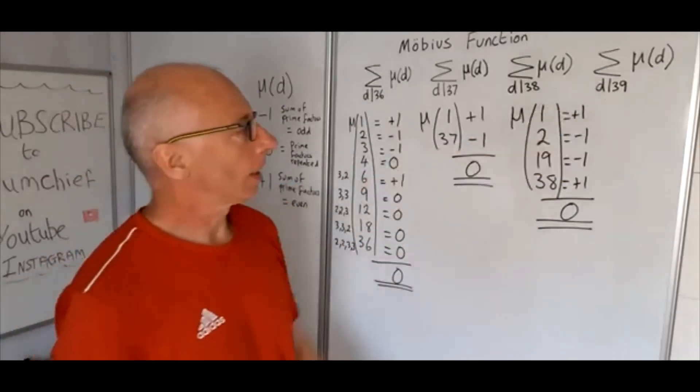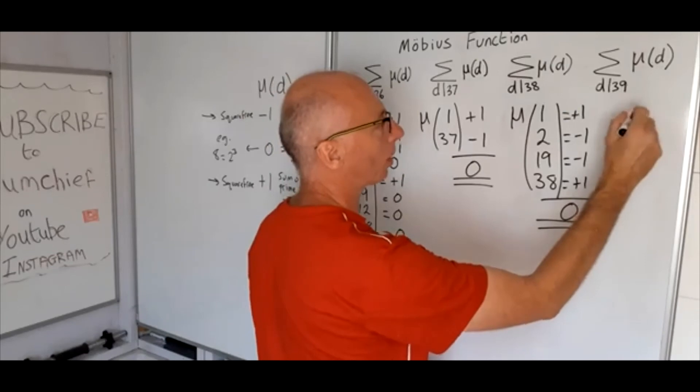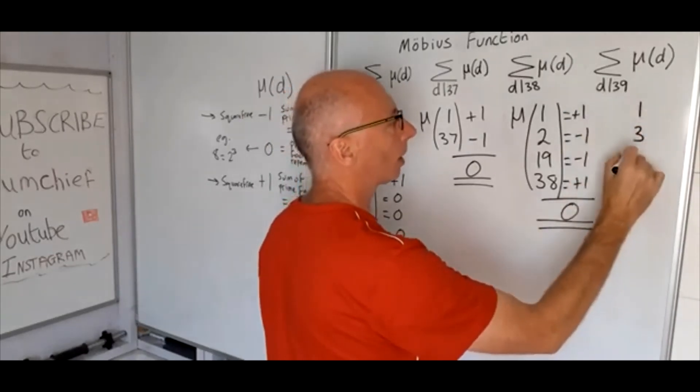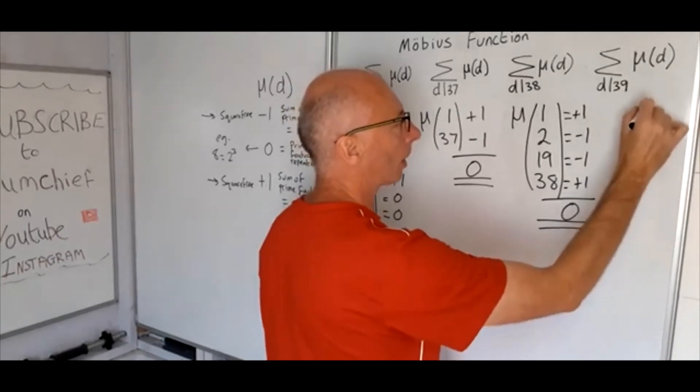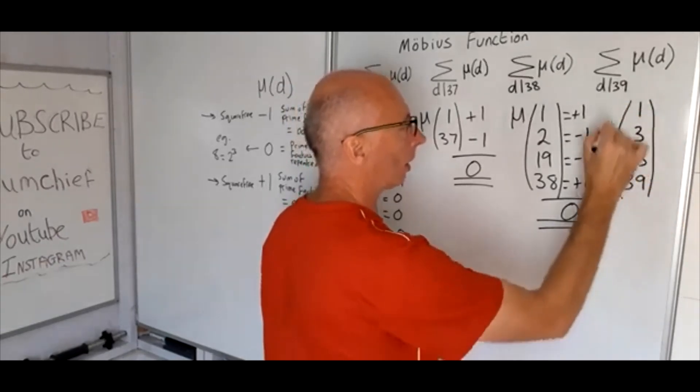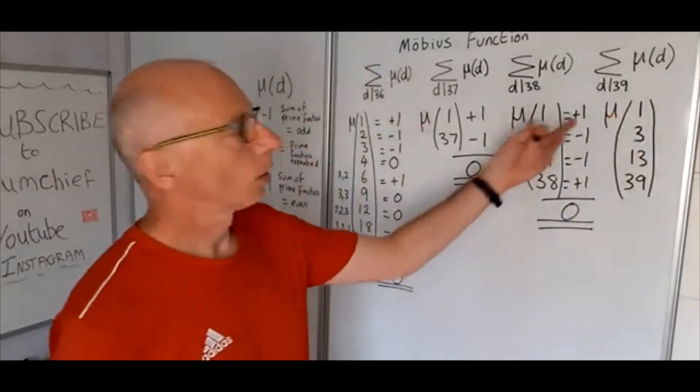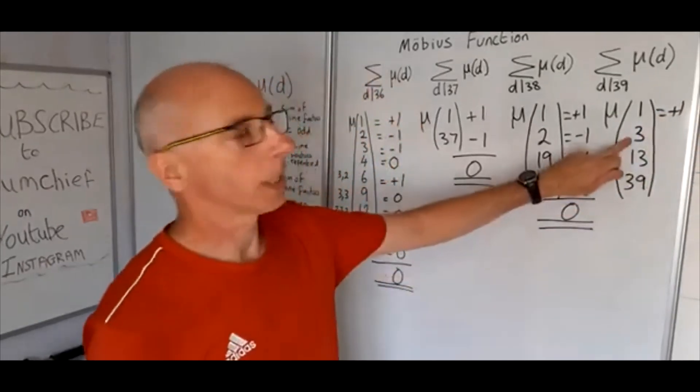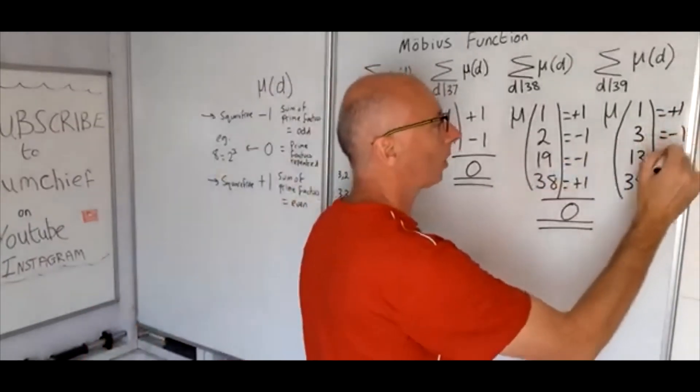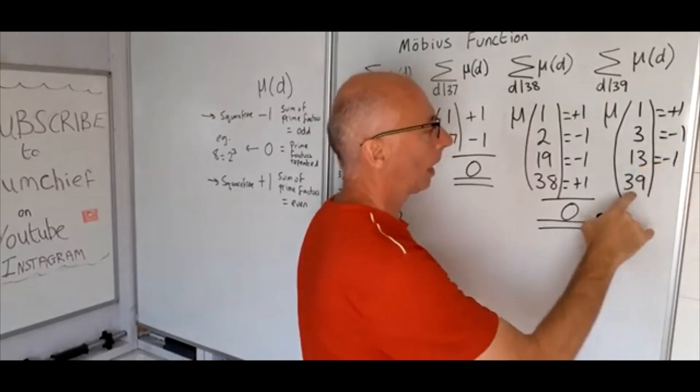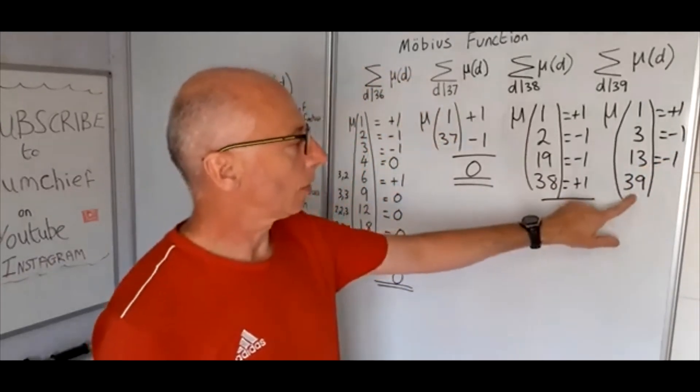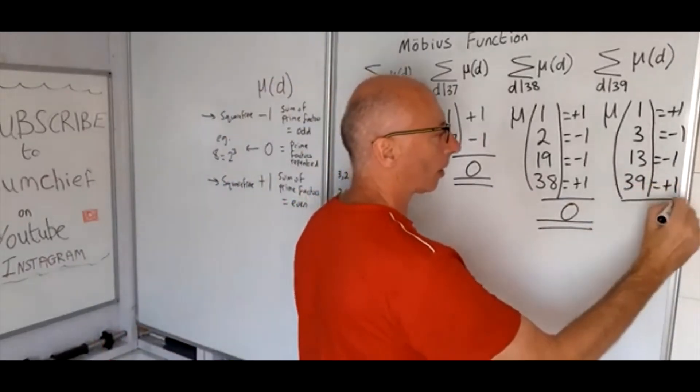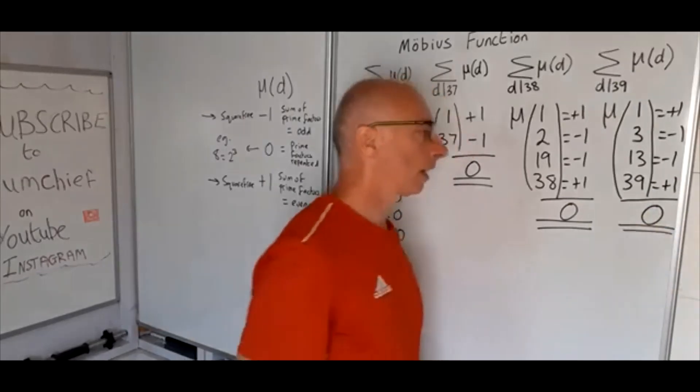Now we try 39, let's see what we get. I think we know what we're going to get, but let's go with it anyway. So divisors of 39 are 1, 3, 13, and 39. Let's take the Möbius function of all these: MU of 1 we know is plus 1. 3 is a prime number so that's a minus 1, so too is 13. And 39, prime factors of that are 3 and 13, so that's positive 1. So again our answer is 0.